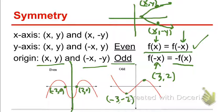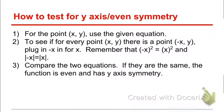Now let's look at how to test for even symmetry — y-axis symmetry. To represent the point (x, y), we use the given equation. Then you take that equation and plug in (-x) for x. You don't plug anything in for y, but you replace x with negative x. Then try to simplify it. If they come out to be the same, the function is even and has y-axis symmetry. It's a lot to take in, but the example will make more sense.